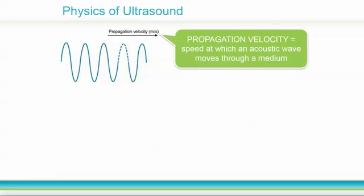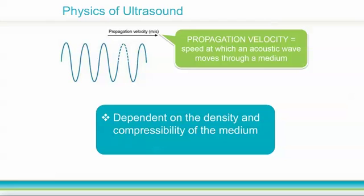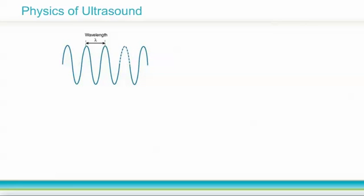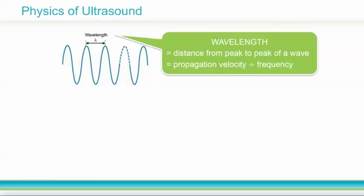Propagation velocity is the speed at which an acoustic wave moves through a medium. This is dependent on the density and compressibility of the medium, and determines acoustic impedance. We'll come back to that in a moment when we discuss tissue echogenicity. Wavelength is defined as the distance from peak to peak of a given wave. It is mathematically equal to the propagation velocity divided by frequency.